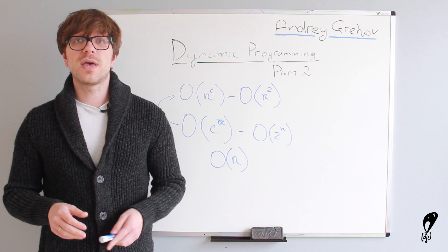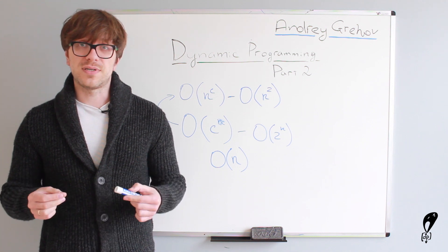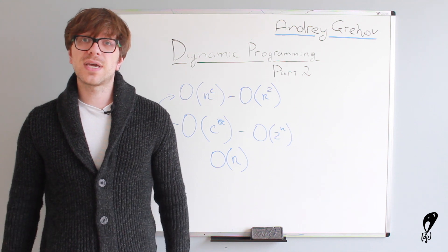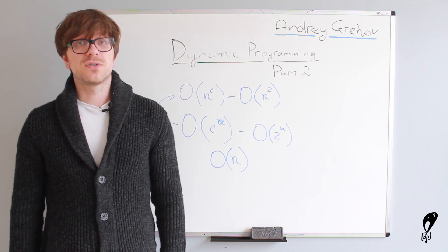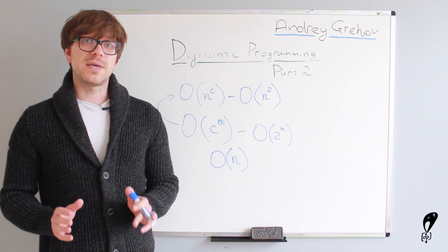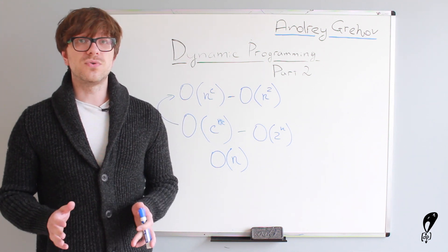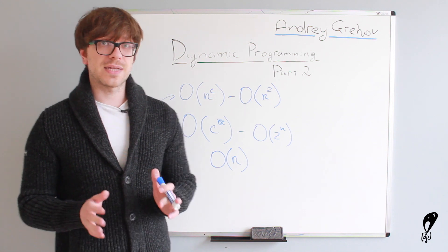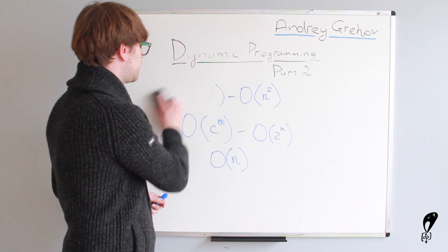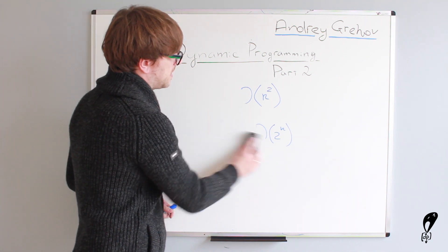So, let's take a look at what are the properties, what are the characteristics of a problem that tells us that we can apply Dynamic Programming to solve it. If you want to solve a problem with Dynamic Programming, it has to have two properties. Let's take a look at those. I'm going to clear the board and write those properties down.